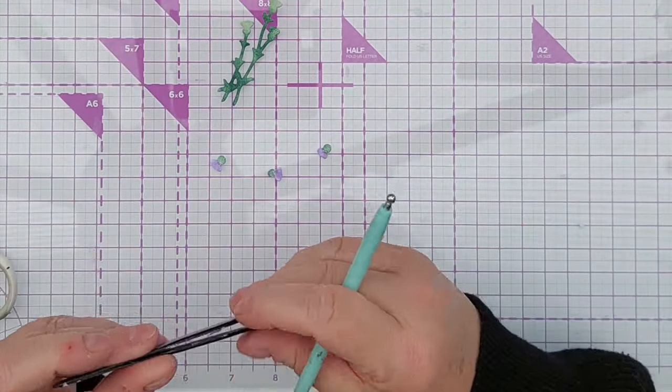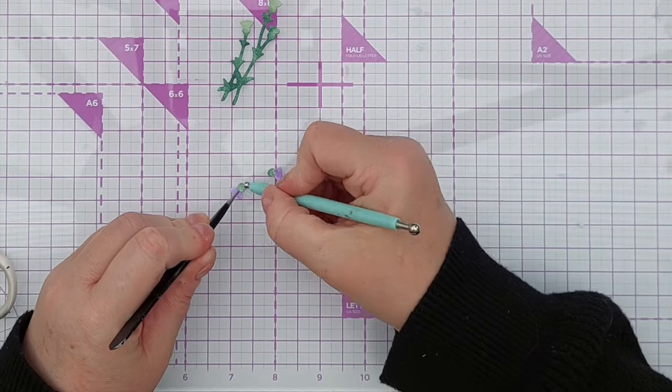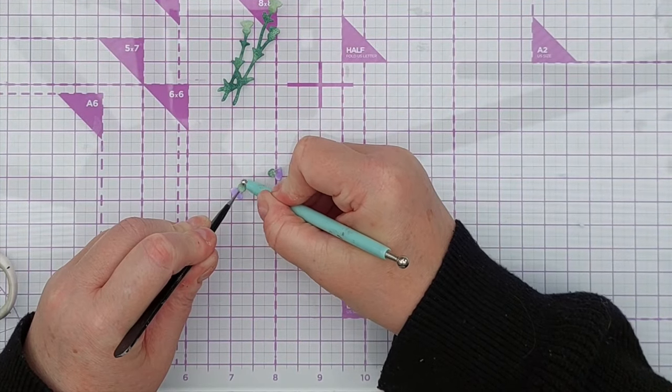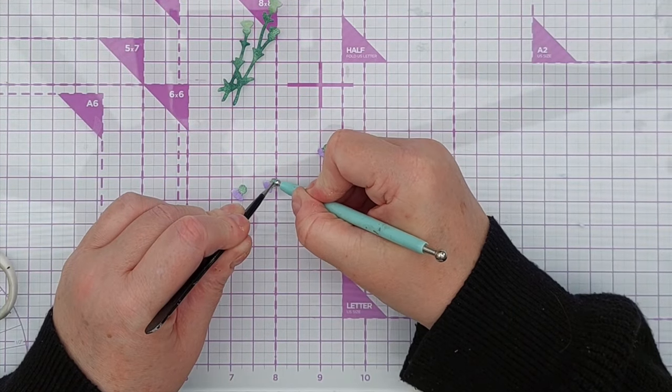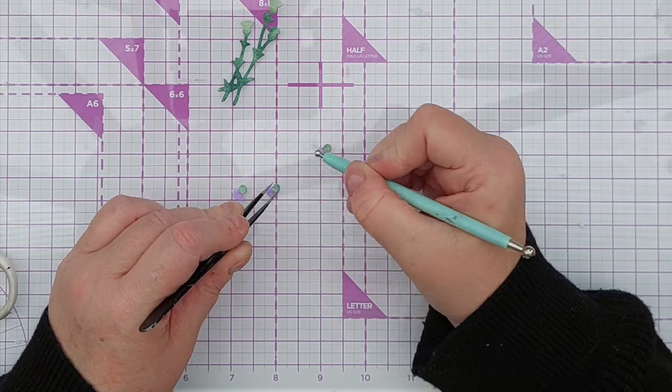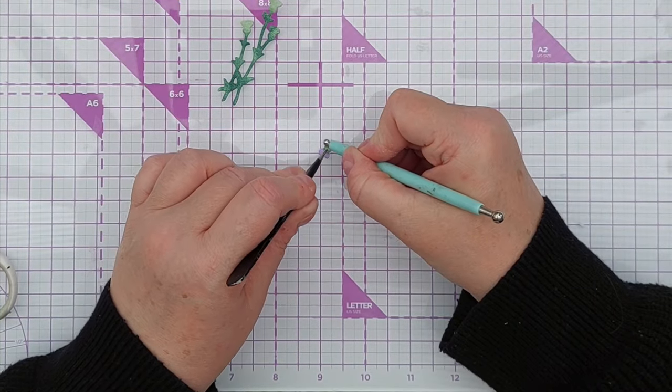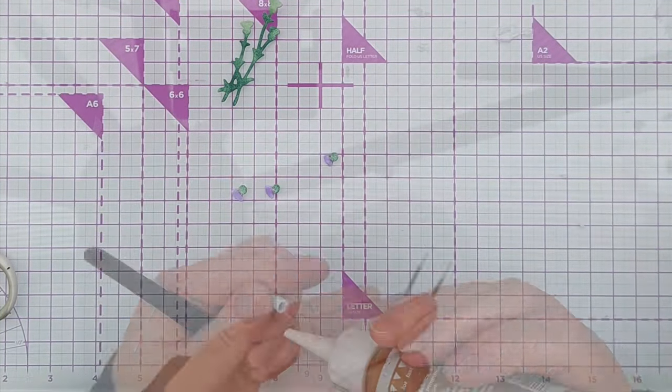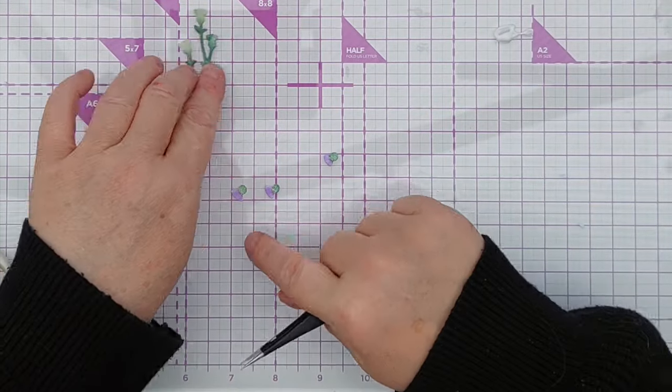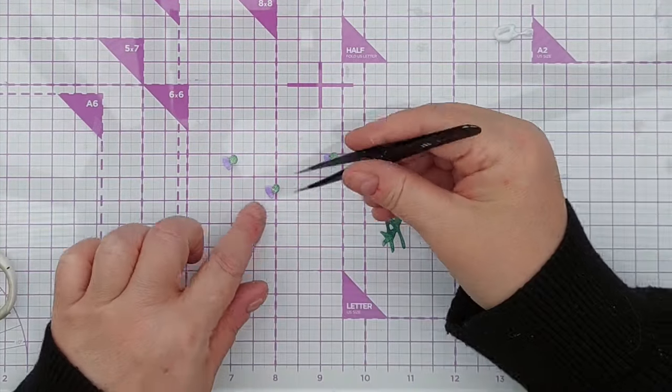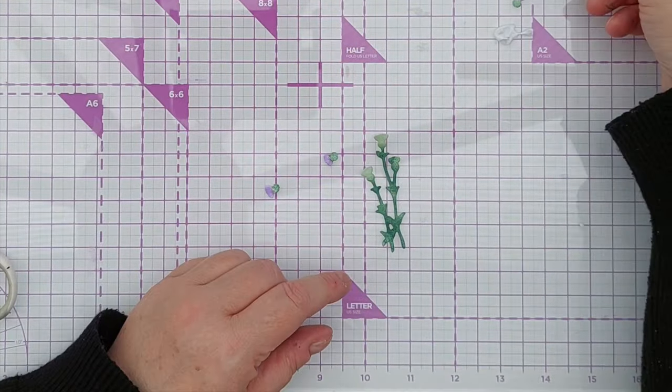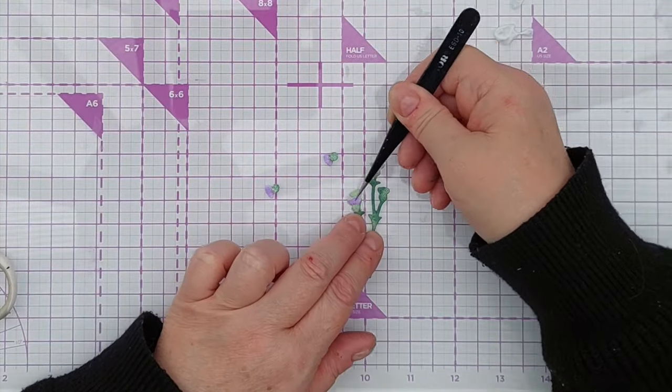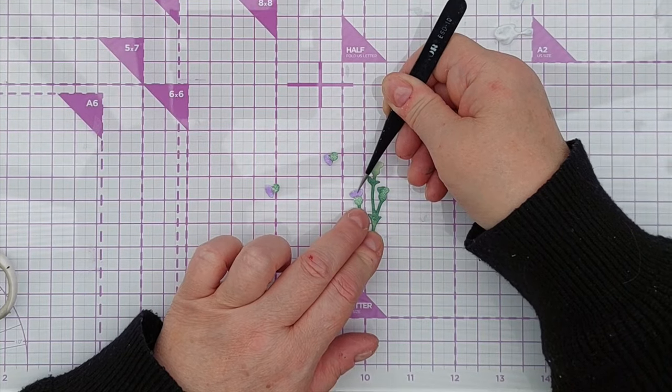But I do want to take my embossing tool and run it around the bit where I cut just to bevel the edges, make it look a little less scissor cut and a bit more die cut. Now I just need a little bit of glue and I can dip my thistles and add them on top here.